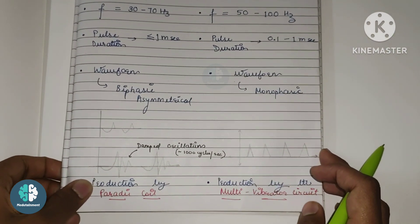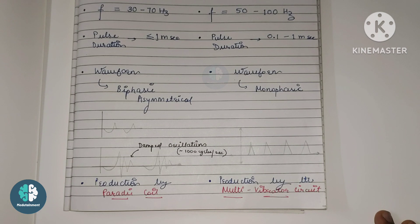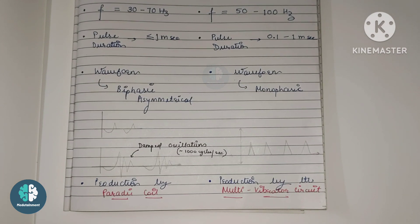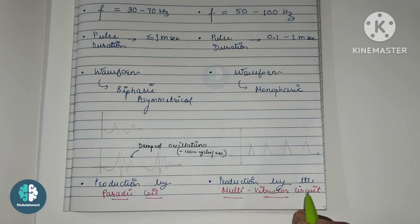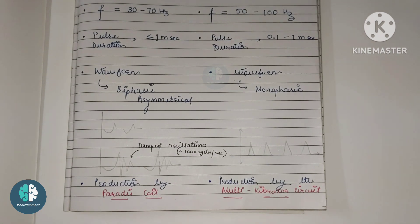The waveform for the faradaic type current is monophasic — it is not biphasic and has only a single phase. Production of the faradaic type current is by a multi-vibrator circuit, whereas the original faradaic current used the faradaic coil. Both are produced by different circuits and have different waveforms.